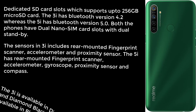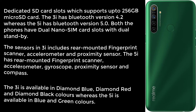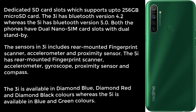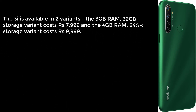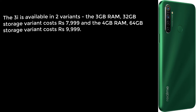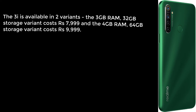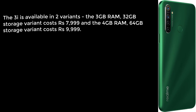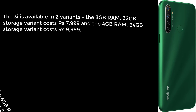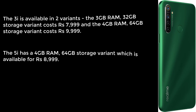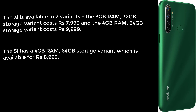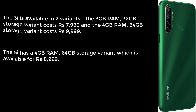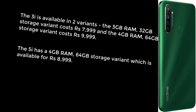The 3i is available in Diamond Blue, Diamond Red, and Diamond Black colors, whereas the 5i is available in Blue and Green. The 3i comes in two variants: the 3 GB RAM / 32 GB storage variant costs 7999 rupees, and the 4 GB RAM / 64 GB storage variant costs 9999 rupees. The 5i has a single 4 GB RAM / 64 GB storage variant available for 8999 rupees.